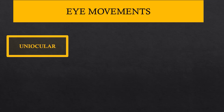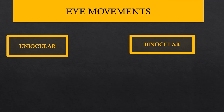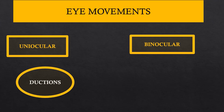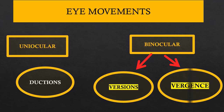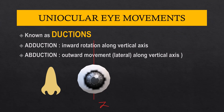Eye movements are basically two types: uniocular, that means occurring in one eye, and binocular, that means occurring in both eyes together. The uniocular movements are known as the ductions, and the binocular movements are again classified into two types: versions and vergences. First, we shall be discussing about the uniocular movements, that are the ductions.